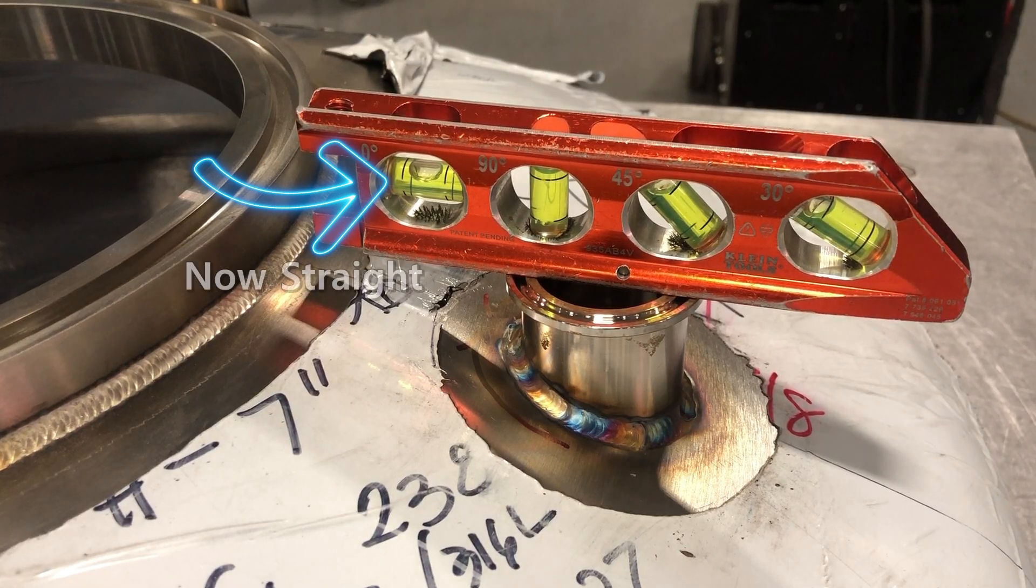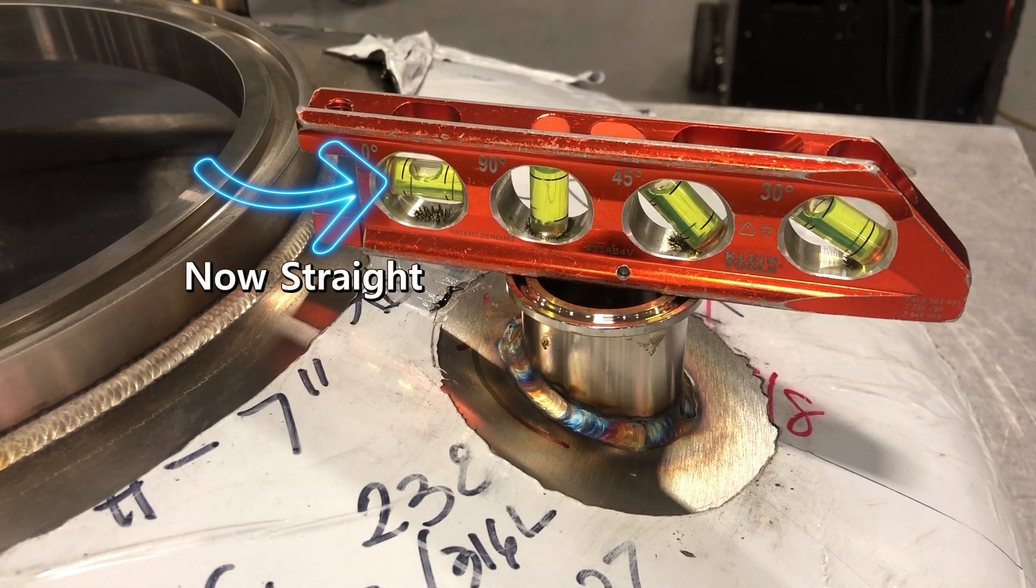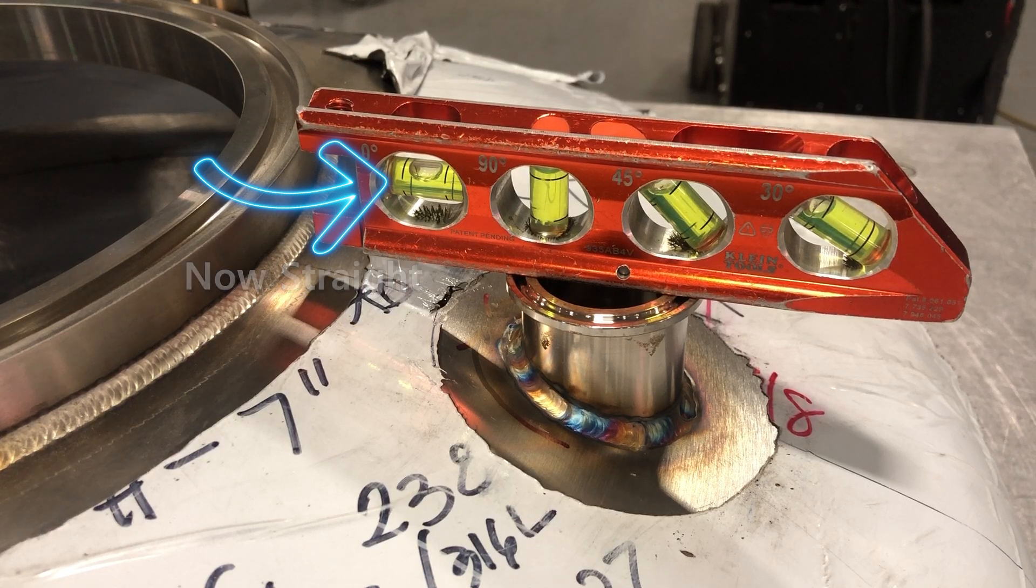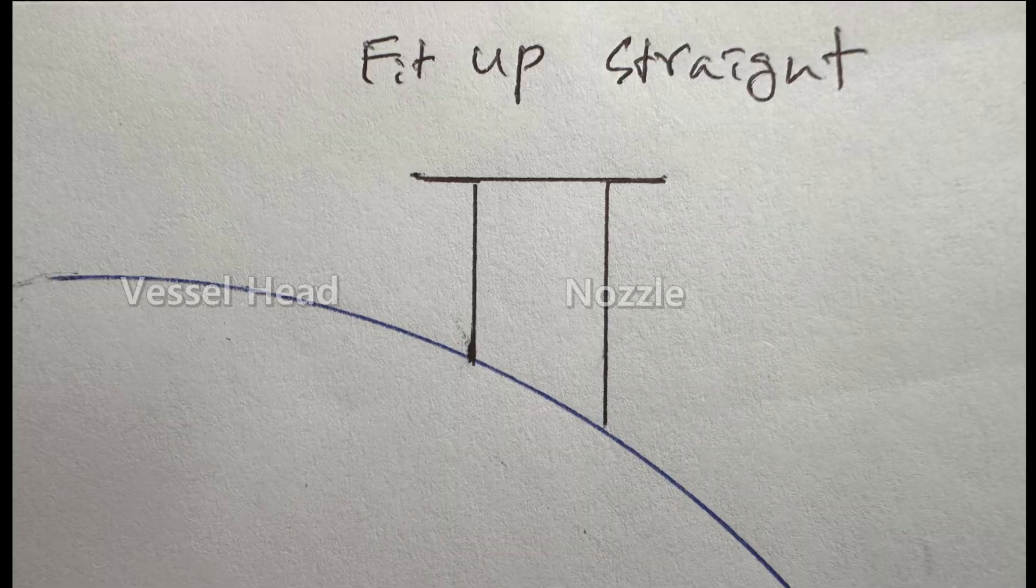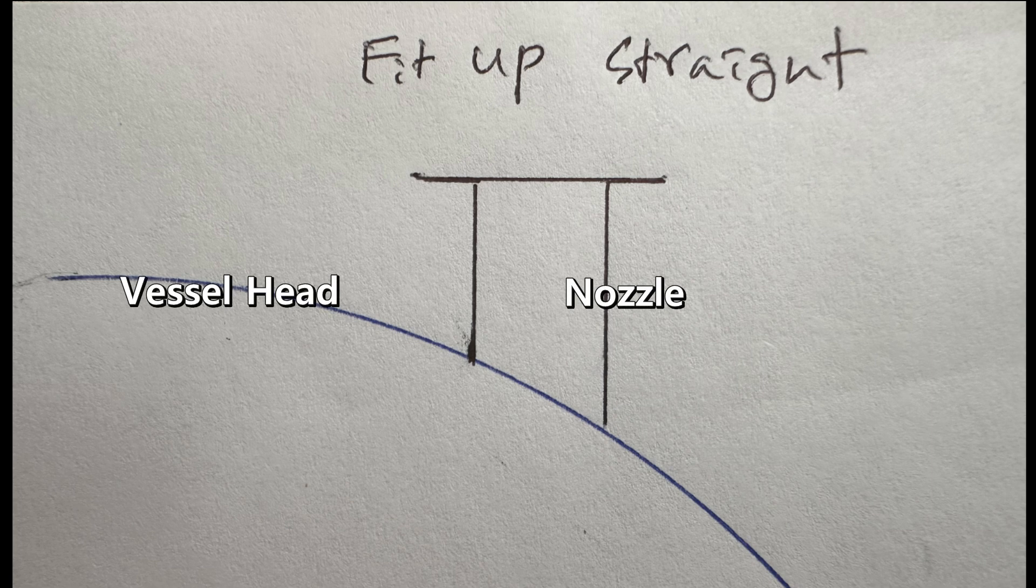If it had been tilted the other side, it would have been a big pain to fix it. First, let me explain why it wasn't straight after welding. Most of you will fit the nozzle onto the vessel head straight. That's what the drawing says.